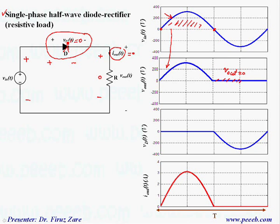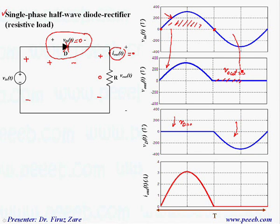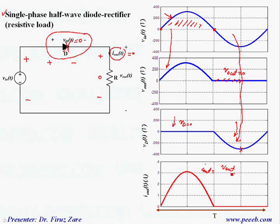Now let's look at the voltage across the diode. For the first half cycle, because the diode conducts and assuming the forward voltage drop is zero, we have the input voltage across the load. For the second half cycle, because the output voltage is zero, the input voltage appears across the diode. So the diode must be able to block this voltage. The output current is based on load impedance — output voltage divided by the resistor — so the current waveform is exactly similar to the voltage waveform because we have a resistive load.